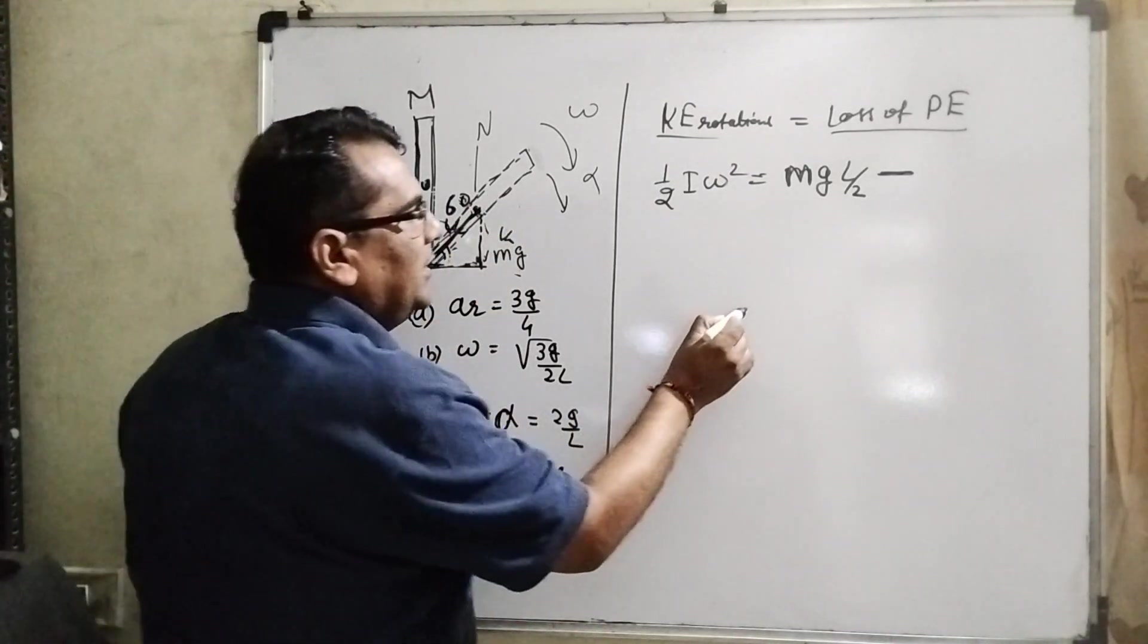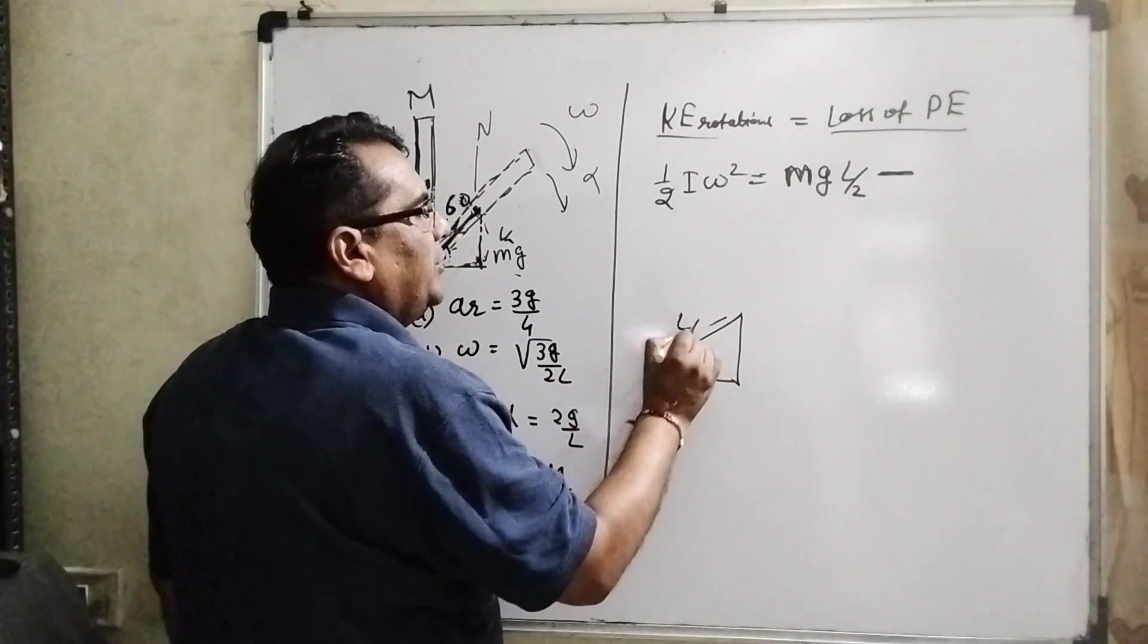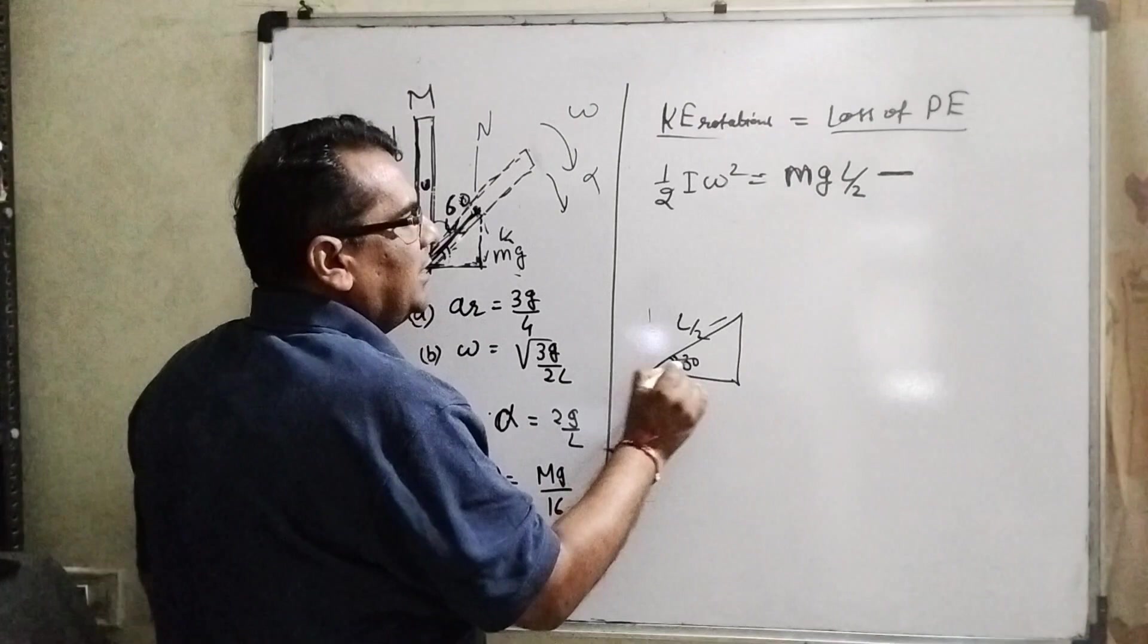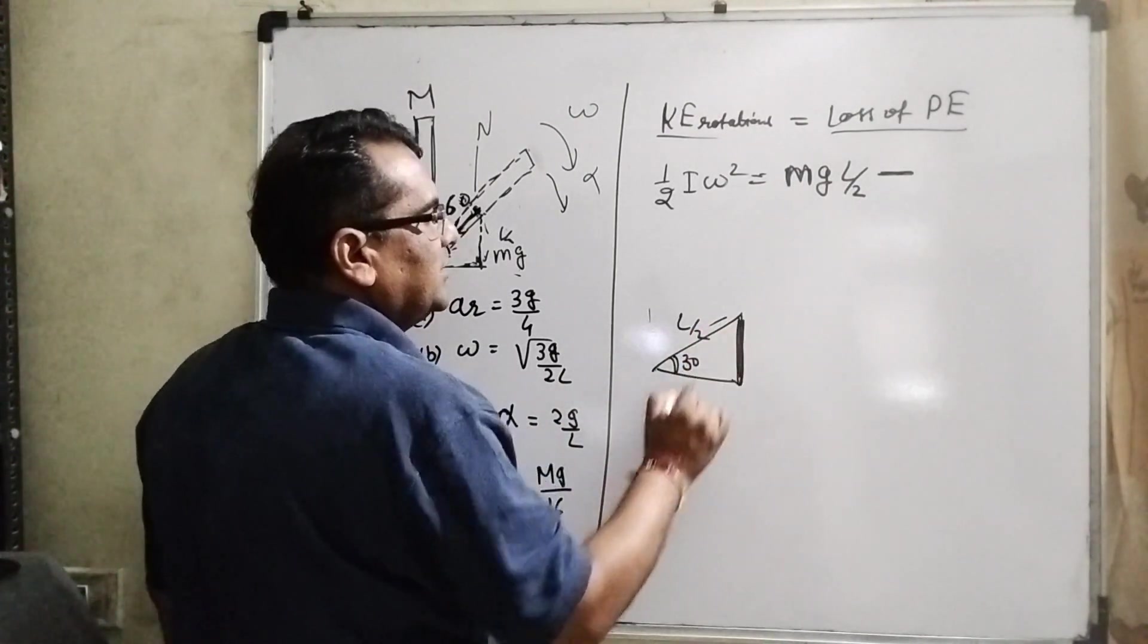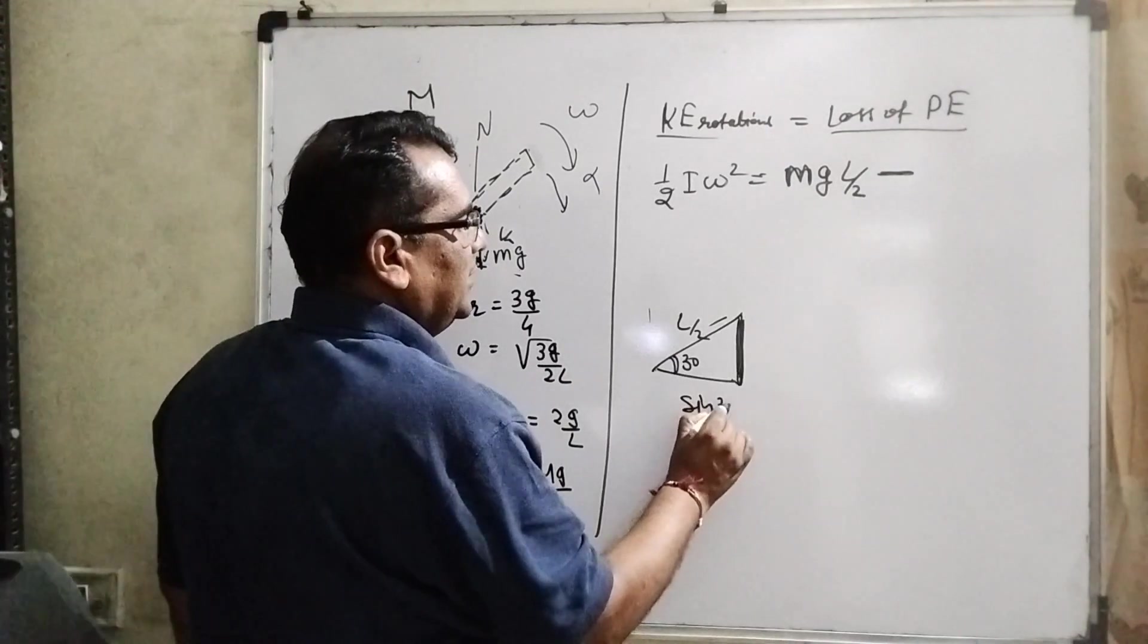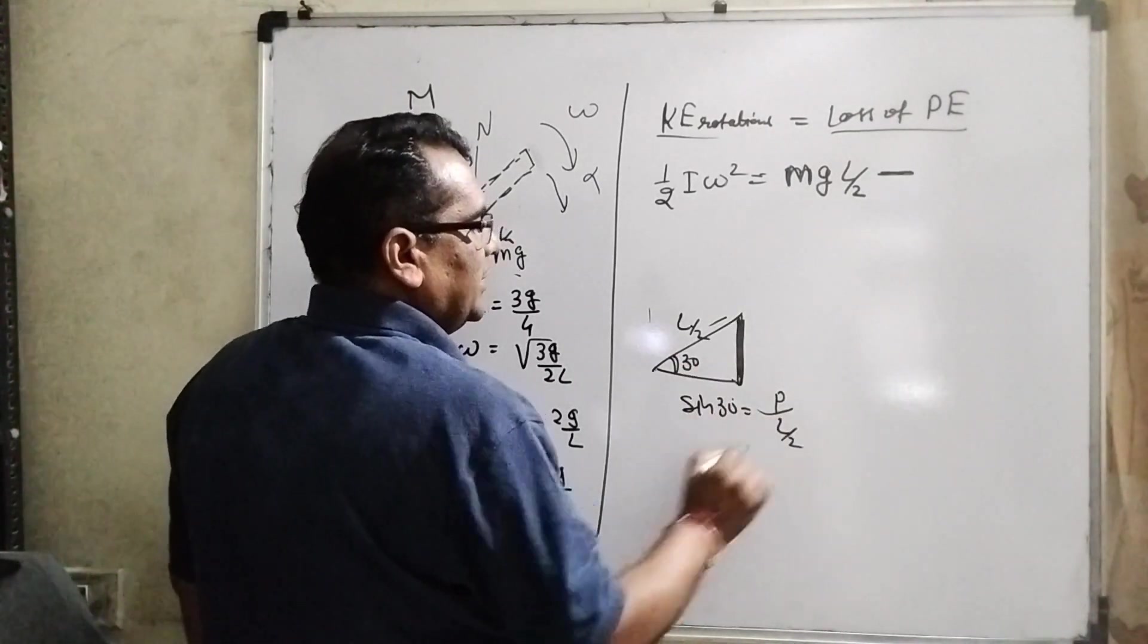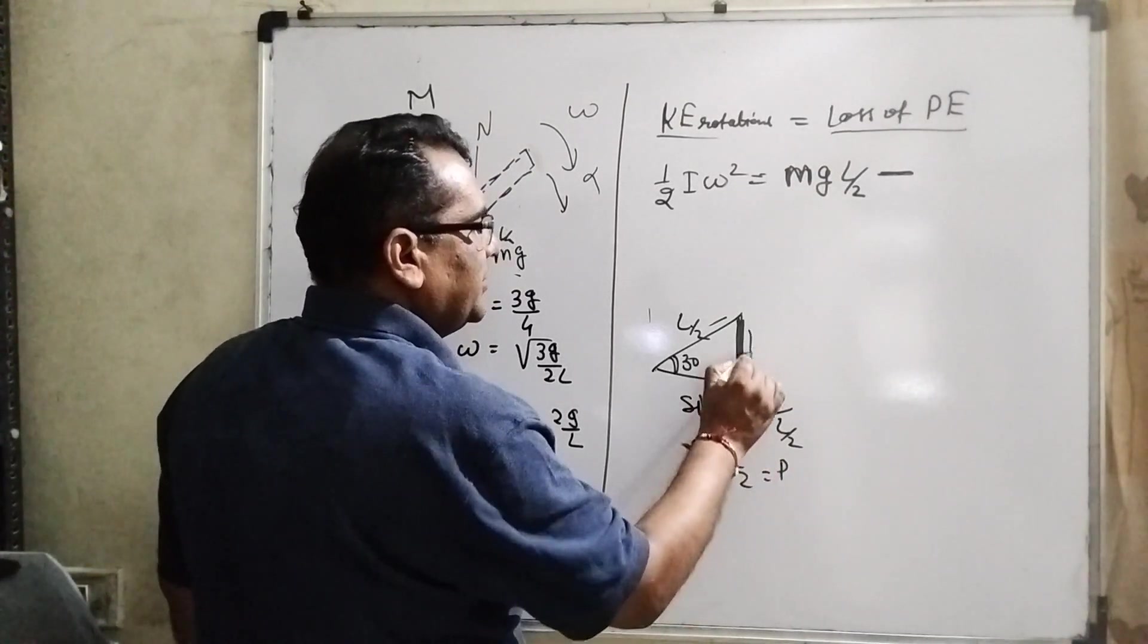You can see that this distance, we can draw separately. Let us consider here, this is L by 2 and this is 60 degrees, so this remaining angle is 30. And we have to find out this distance. This distance is sine 30 equal to perpendicular upon hypotenuse.